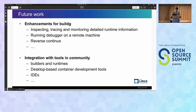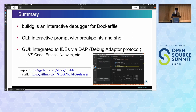BuildG is still in an early stage of development, so there are some works to be done for maturing it. We will continue to work on integration of debugger features with tools in the community, including builders like BuildKit, desktop tools, runtimes, and IDEs. In summary, BuildG is an interactive debugger for Dockerfile. It provides an interactive prompt for debugging Dockerfile with breakpoints, and supports running a container on an arbitrary instruction and deeply inspecting it. BuildG is also integrated to IDEs like VS Code, NeoVim, and Emacs via the Debug Adapter Protocol. Any kinds of feedbacks are very welcome.